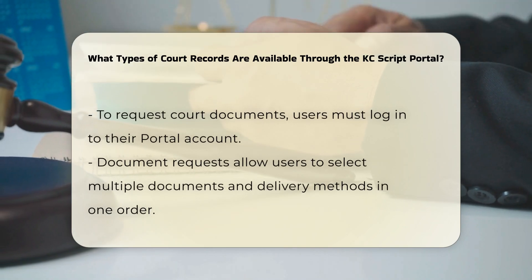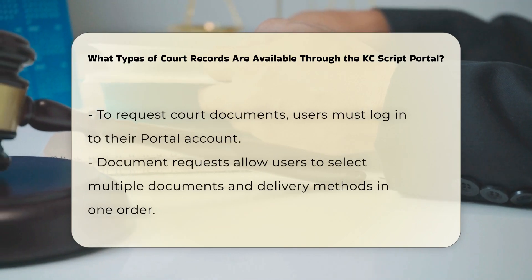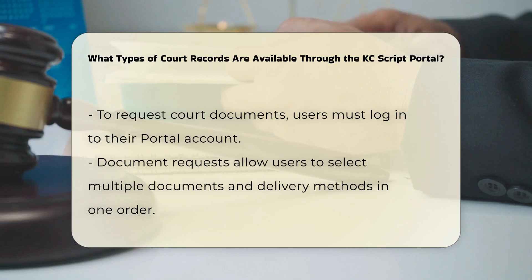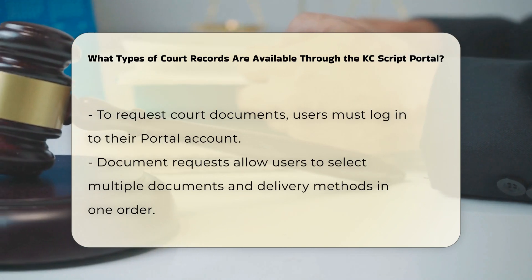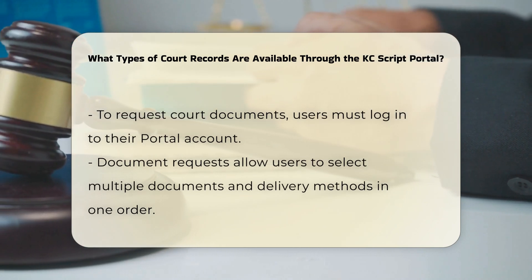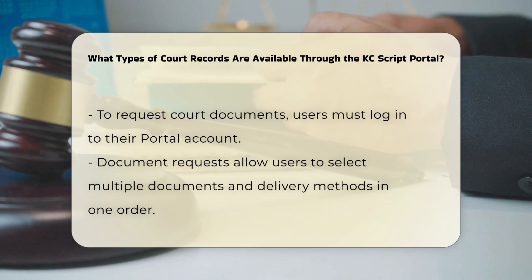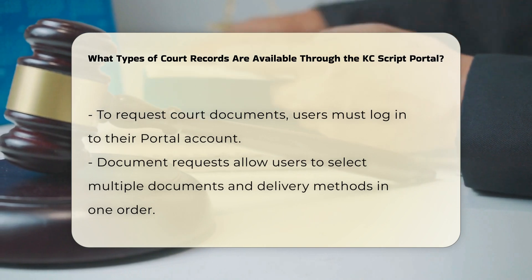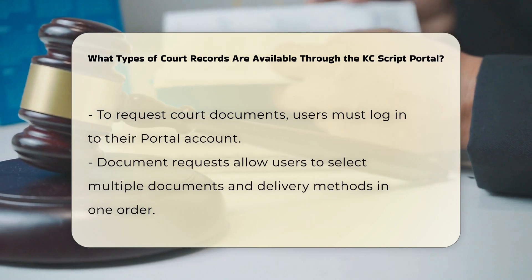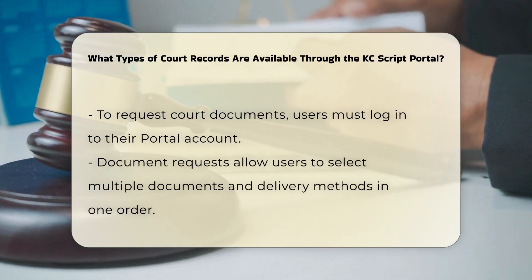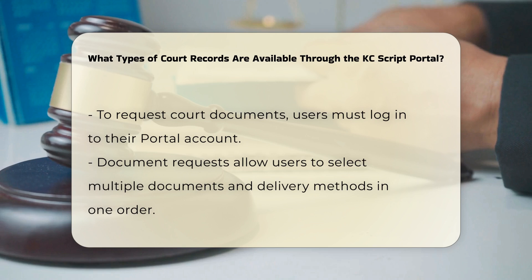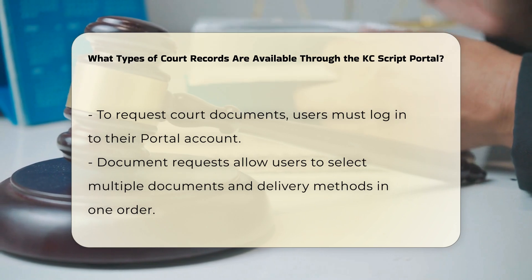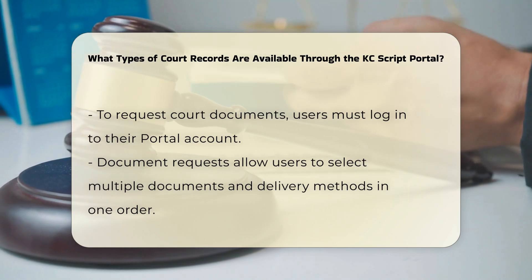Document requests: to request a copy of a court document, you must be logged in to your portal account. You can search for the case number, select the documents you need, and choose the delivery method and copy type. You can also request documents from multiple cases in a single order.